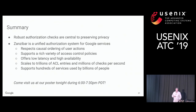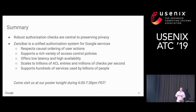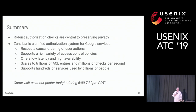To summarize: robust authorization checks are central to preserving privacy online. Zanzibar is a unified authorization system for Google services that respects causal order of user actions, supports a wide variety of access control policies, offers very low latency and very high availability, and scales to trillions of access control lists and millions of checks per second to support hundreds of services used by billions of people.